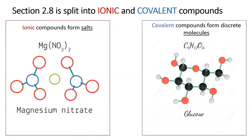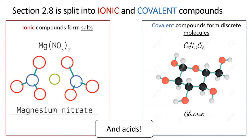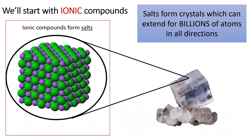This section is divided into ionic and covalent compounds, which have different naming rules. We'll also cover how to name acids, which are different than either ionic or covalent compounds, even though acids have properties of both. We'll start with ionic compounds, which form patterns of repeating ions extending for billions of atoms in all directions.